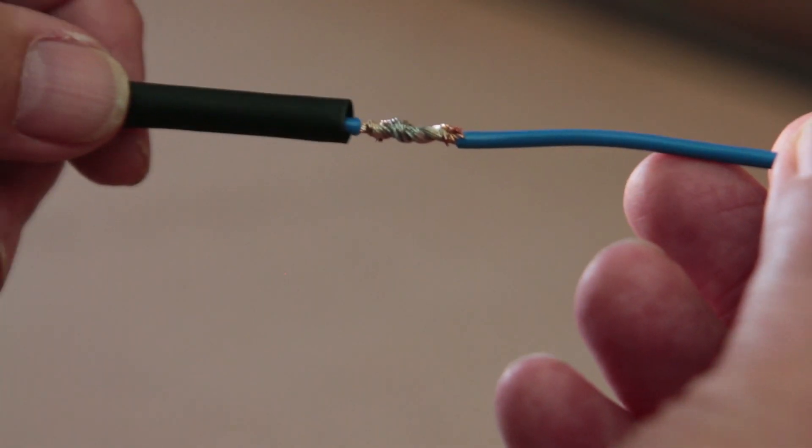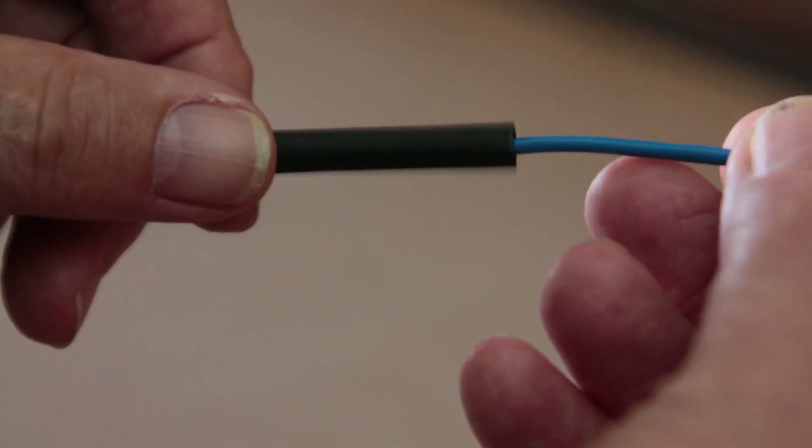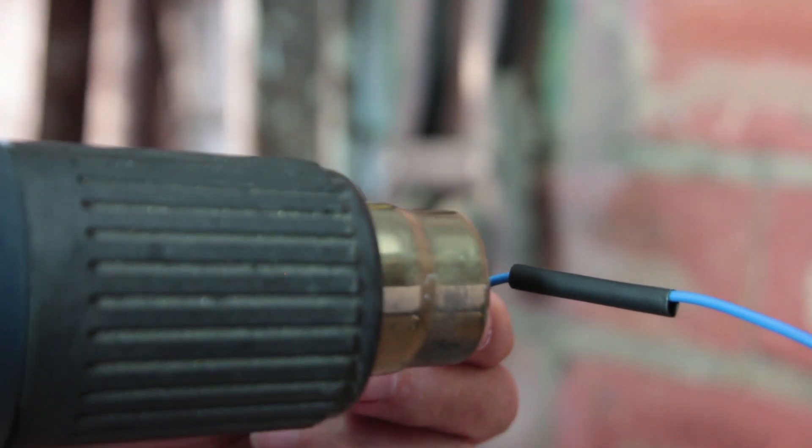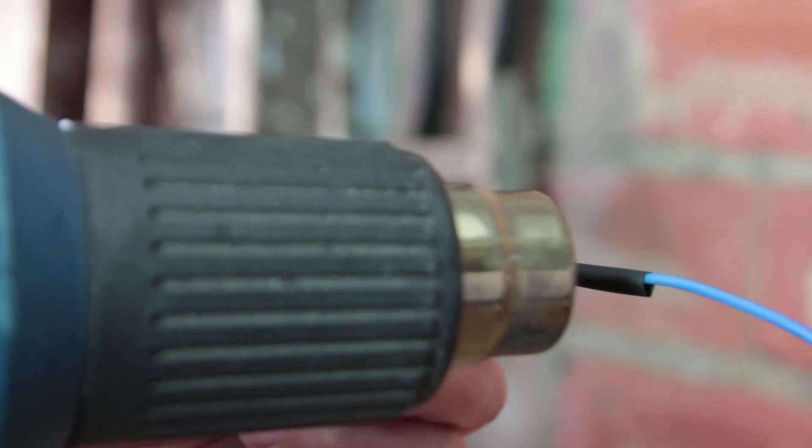Now after you're satisfied with the joint, slide the heat shrink over the top and apply heat to seal. Heat shrink won't come unstuck like electrical tape will.